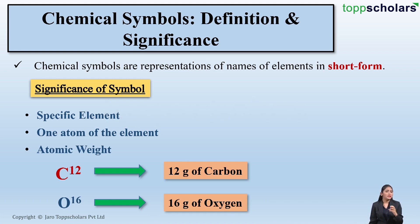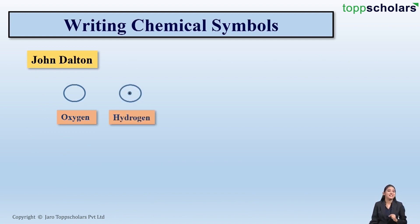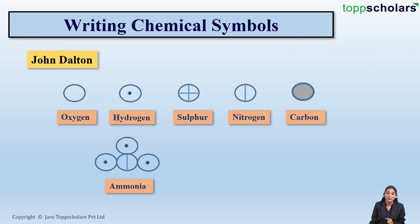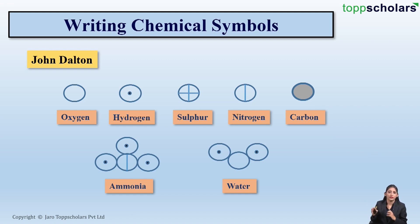But how did this discovery of using symbols for representing elements actually start? John Dalton used a circle to represent an oxygen atom, a circle with a dot to represent a hydrogen atom, as well as many geometric designs to represent different elements and compounds like ammonia and water. But these geometric designs were quite difficult to remember — representing all 118 elements with these geometric designs was very difficult.